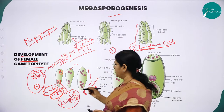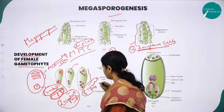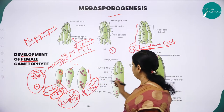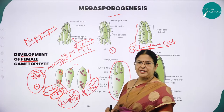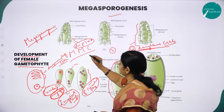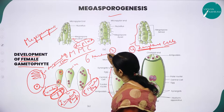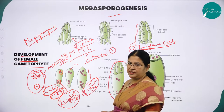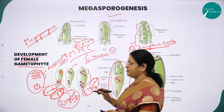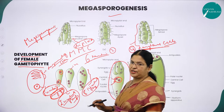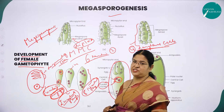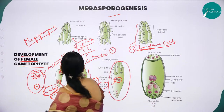After the eight-nucleate stage, the cell wall is formed, resulting in a typical embryo sac within the ovule. Among the eight nuclei, only six will get cell wall formation. The remaining two nuclei move to the center and are called polar nuclei. This is called the eight-nucleate, seven-cell stage.